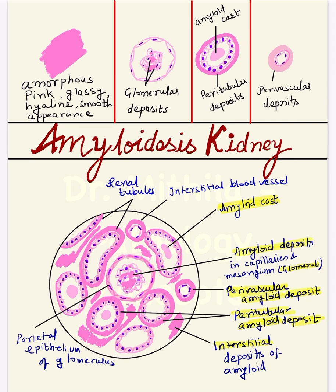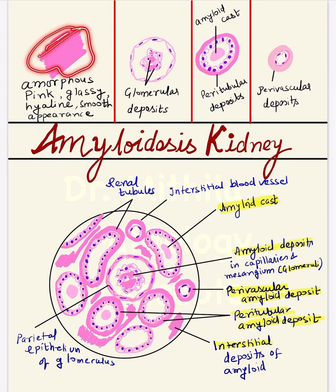First, when we talk about amyloidosis, we should know the microscopic appearance of amyloid protein. This protein is an extracellular fibrillary protein which gets deposited in between the cells. In H&E staining it will appear amorphous — meaning it does not have any form — then pink in color or eosinophilic, glassy, hyaline, and smooth in appearance. There is no granularity; it takes the color of the eosin stain.